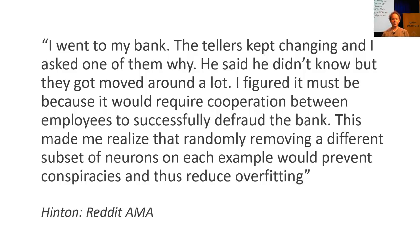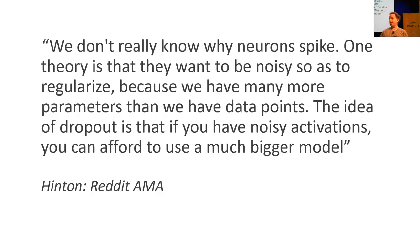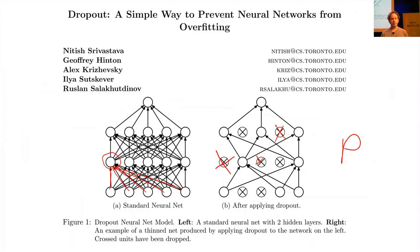Jeffrey Hinton described part of the thinking behind dropout as follows. He noticed every time he went to his bank that all the tellers and staff moved around, and realized the reason must be to avoid fraud — if you keep moving them around, nobody can specialize so much in one thing that they can figure out a conspiracy to defraud the bank. He's also a neuroscientist by training, and there's a view that spiking neurons might help regularization, and dropout is a way of matching that idea. The truth is a bunch of ideas flowing around led them to this concept, and it worked really, really well.